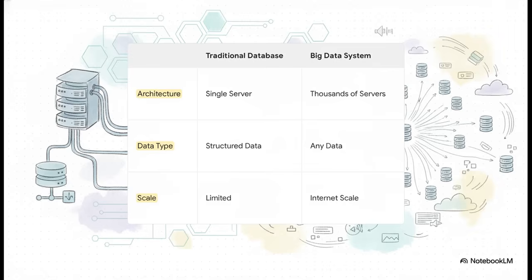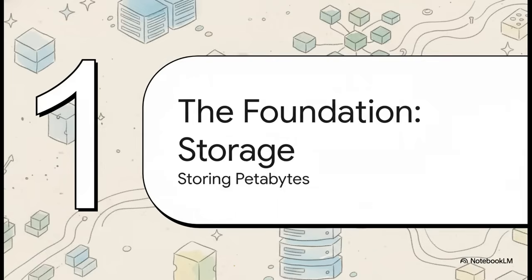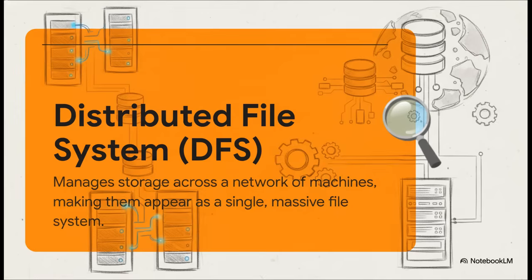So how do they pull it off? Let's start at the absolute foundation: storage. This is problem number one. If you have a petabyte of data—and that's a million gigabytes—how do you physically store it when no single hard drive is anywhere near big enough? The answer is this genius idea called a distributed file system. You basically take a whole bunch of computers, link them up, and use clever software to trick them into acting like one single gigantic hard drive. It's the architectural magic that makes storing all this stuff even remotely possible.